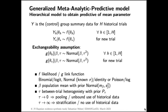We transform each theta with a link function g to a link scale, where we put forward that these different parameters all come from a common normal distribution with population mean beta and between-trial heterogeneity tau. RBesT supports the canonical combinations of likelihood and link functions: a binomial likelihood with logit link, a normal likelihood with known standard deviation and identity link, and the Poisson likelihood with log link. For the population mean parameter beta, a prior is required.